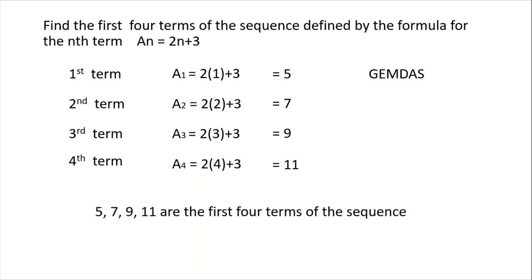And for our last term, we have 2 times 4 plus 3 is equal to 11. So therefore, 5, 7, 9, and 11 are the first 4 terms of the sequence.